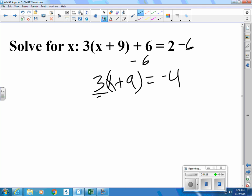Let's divide each side by 3. So, x plus 9 equals negative 1.33 repeating.